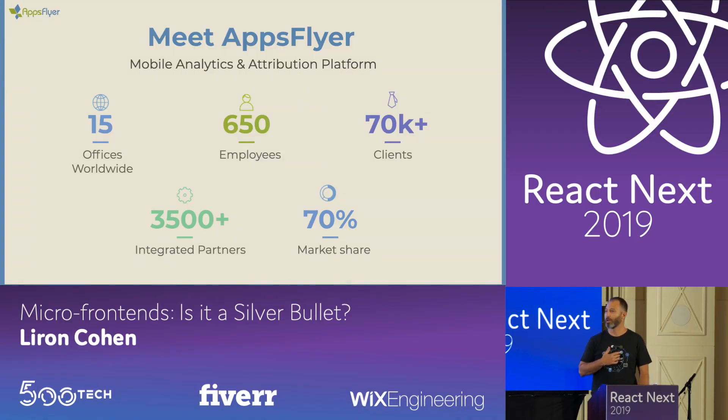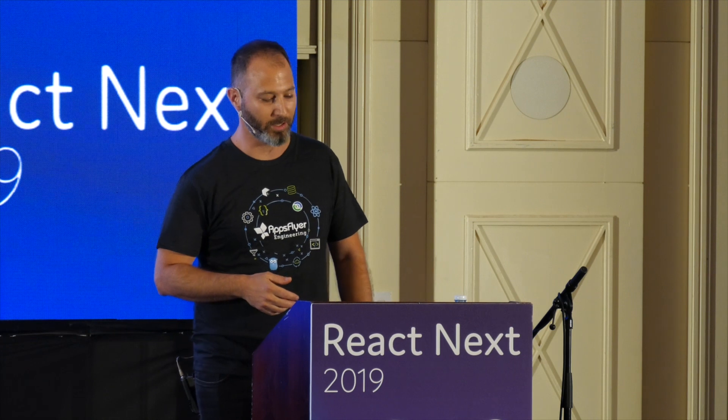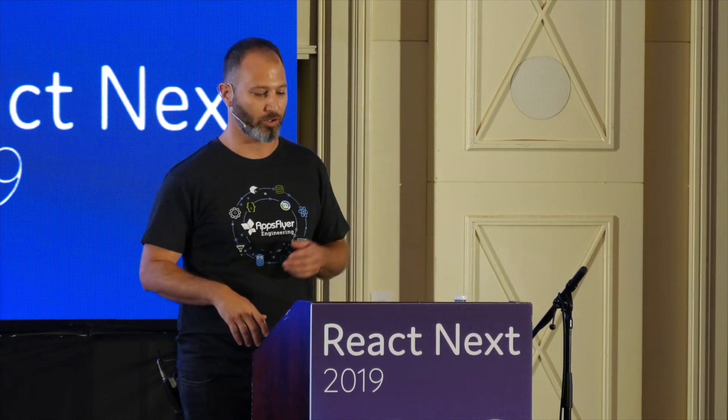My name is Liron, and I'm a front-end architect at AppsFlyer. AppsFlyer is a mobile analytics and attribution platform, and we basically help app developers understand better how their marketing money is being spent. We started to operate in 2012 as a two-man show, and we grew rapidly since. In the past three years, we grew our dev team from 20 people to 200 people. With more developers, product managers want to deliver more features and more products. This means your code base is growing bigger and bigger, which imposes a lot of risk. Being heavily experienced with micro services for the back-end side, we thought micro front-end would be a very natural path for us to take for the front-end layer as well.